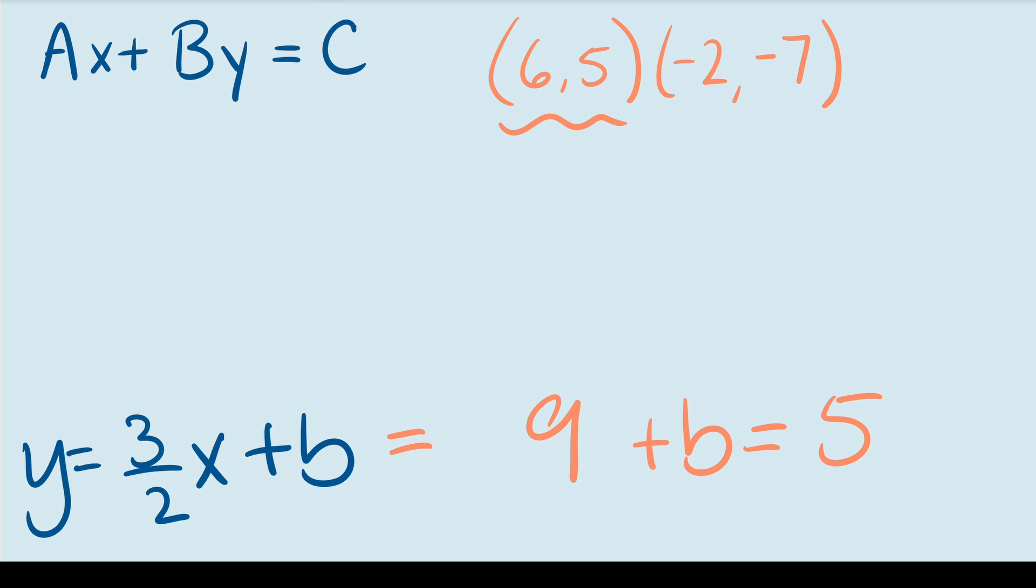To solve for b, all we need to do is subtract 9 from both sides. So b is equal to 5 minus 9. We can rewrite that because we know that 5 minus 9 is equal to negative 4. So b is equal to negative 4. Now that we know that, we can plug that into our slope intercept form. So here it is. Our slope intercept form of this linear equation is equal to y equals 3 over 2 times x minus 4.